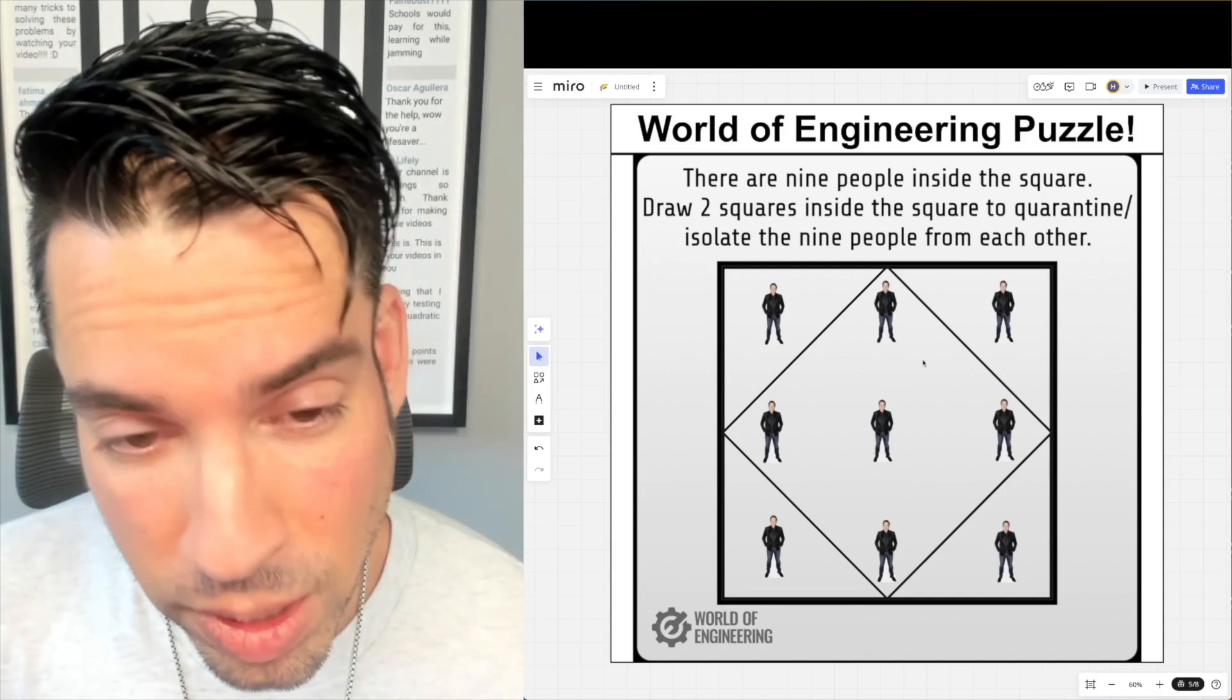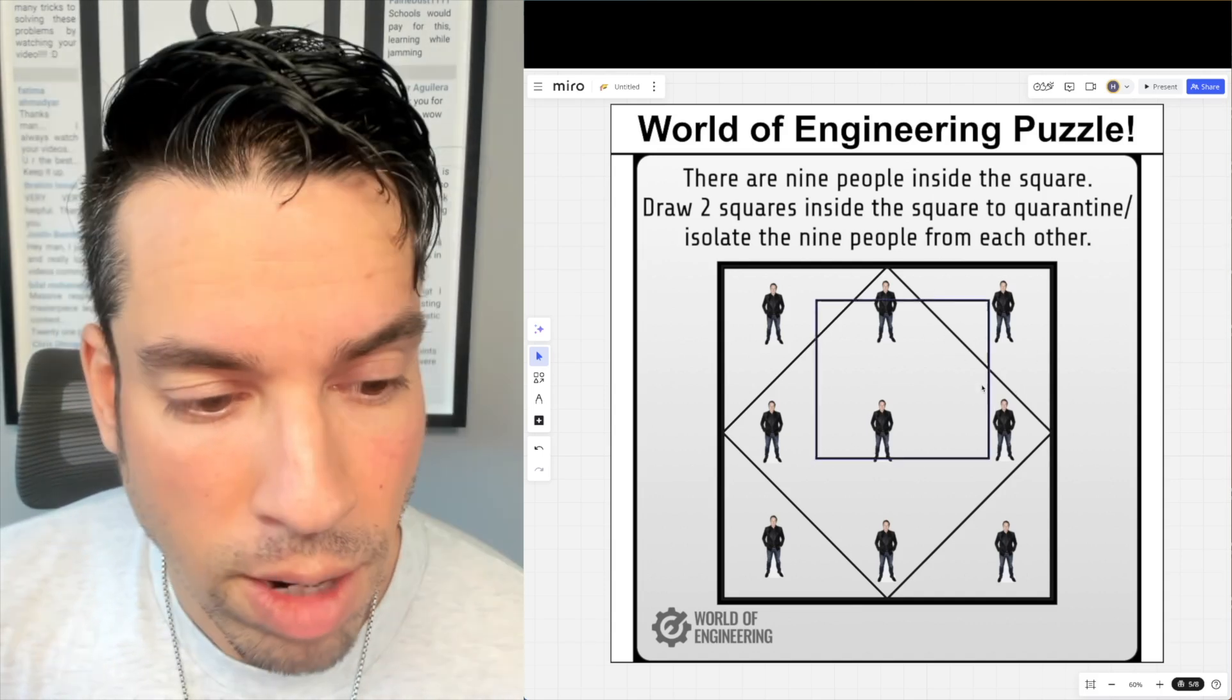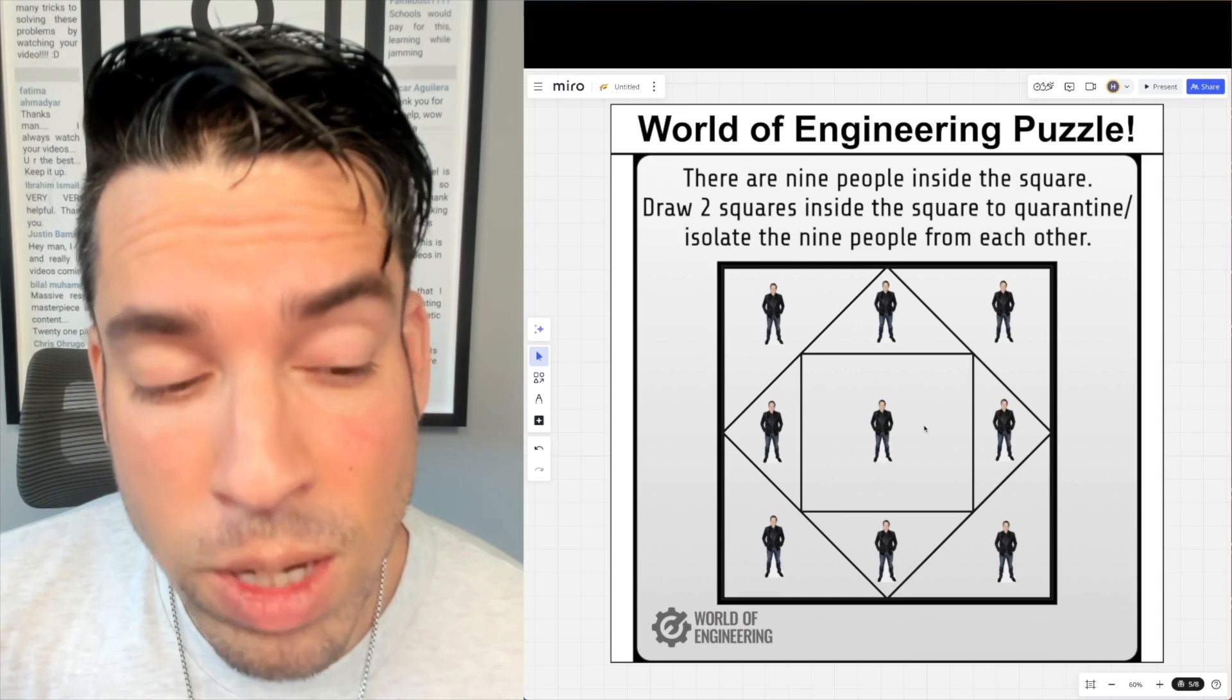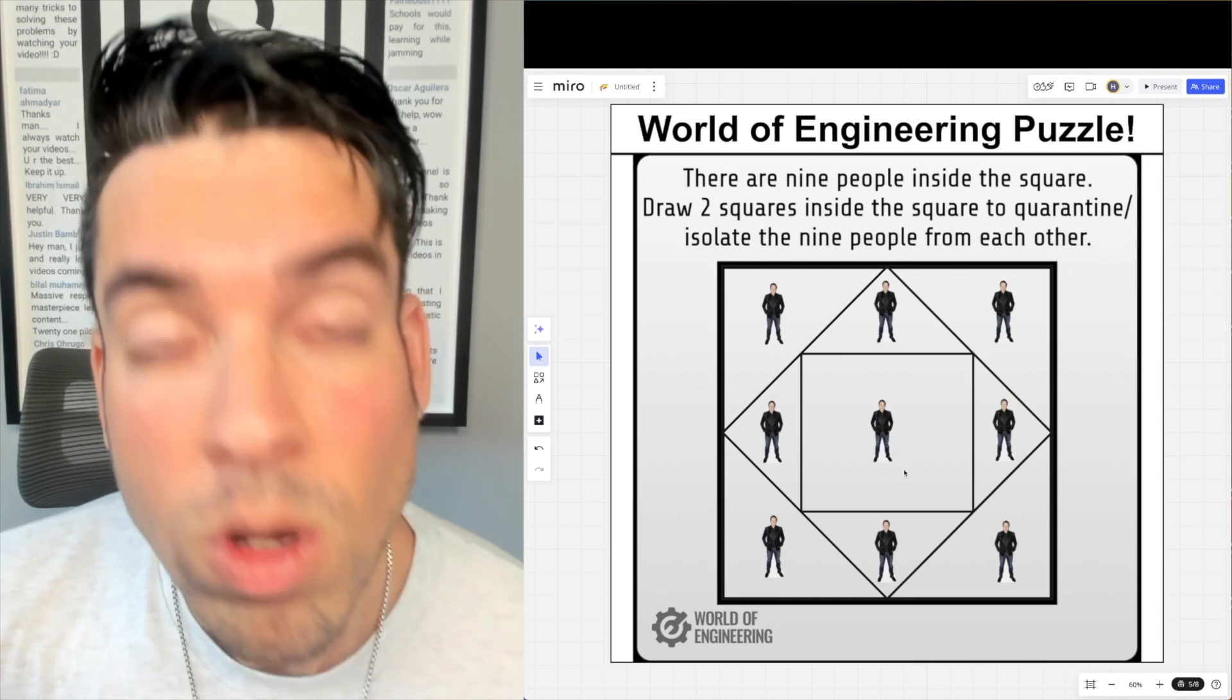Now for the final square, we're going to have it in the regular orientation and we're going to pop it right here in the middle. And now you can see that every person is in its own zone. We have done it!